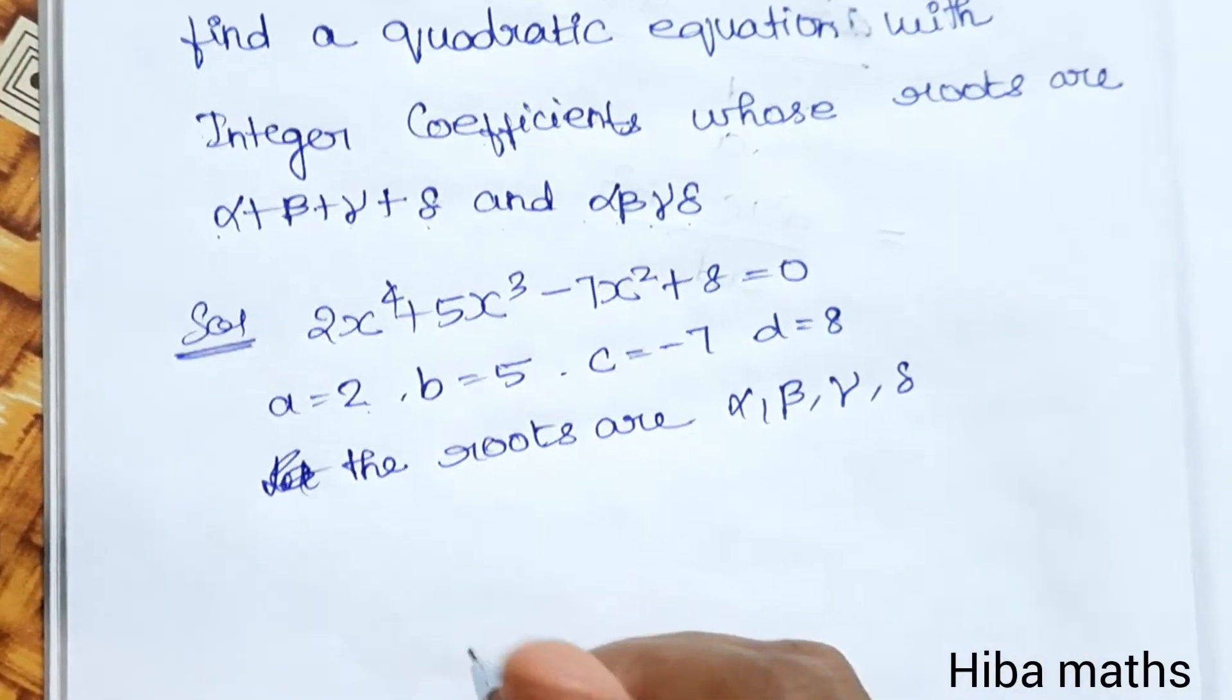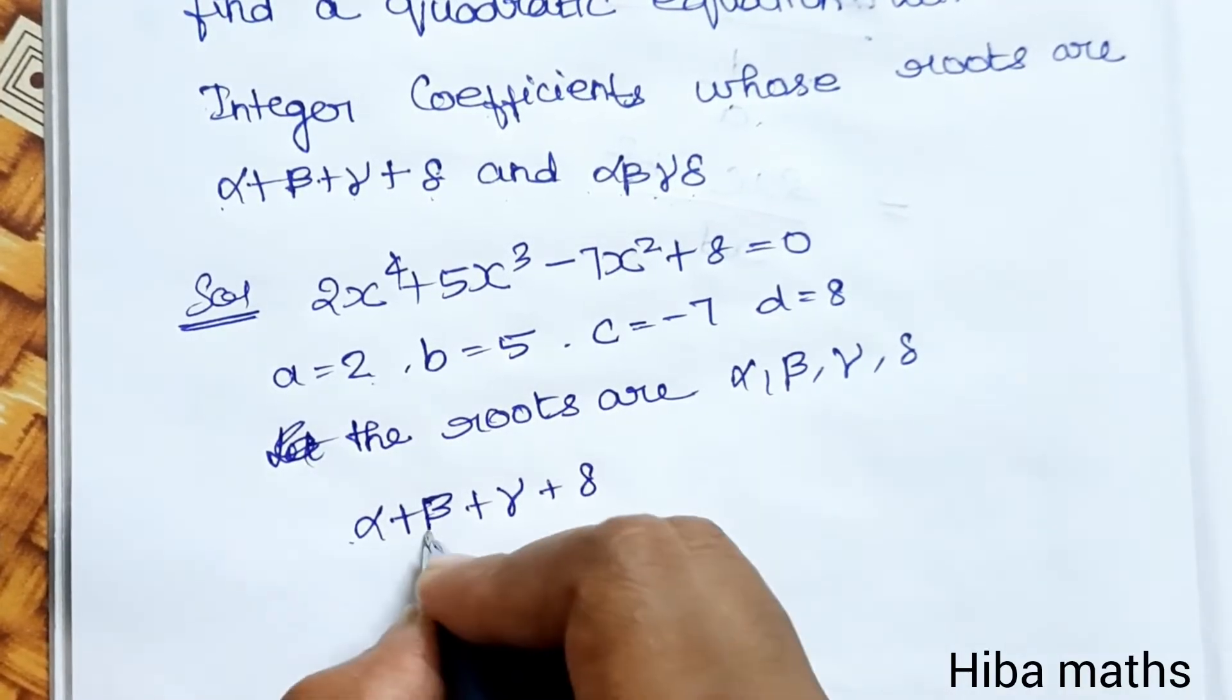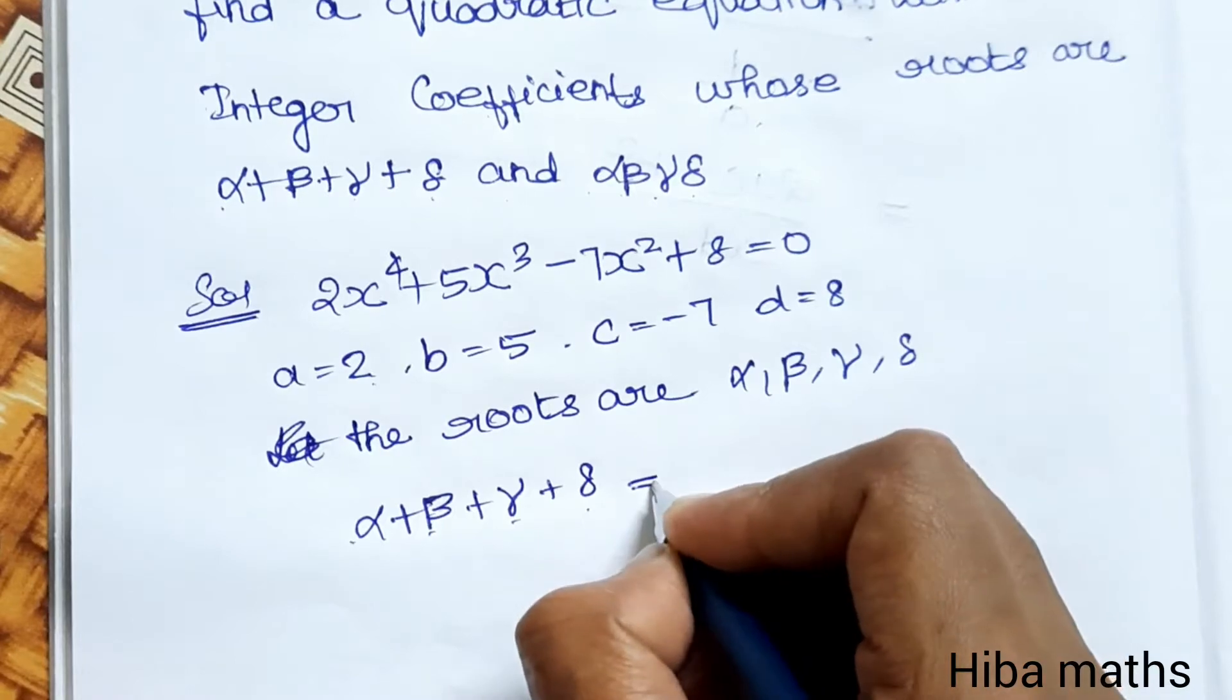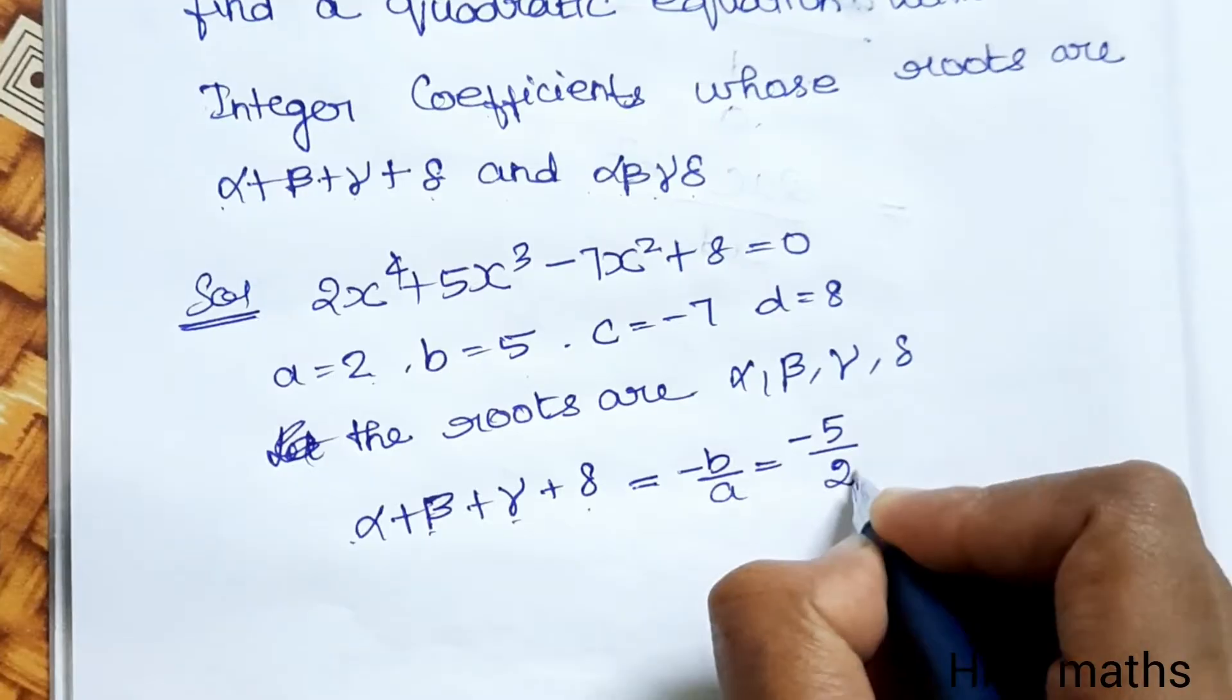Now let's get the sum of the roots: α + β + γ + δ = -b/a. b value is 5, so -5/2.